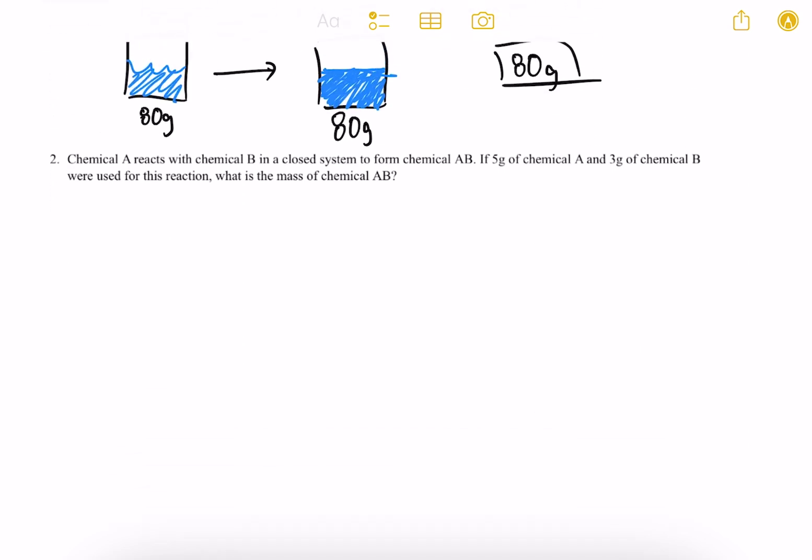Chemical A reacts with chemical B in a closed system to form chemical AB. If five grams of chemical A and three grams of chemical B were used for this reaction, what is the mass of chemical AB?